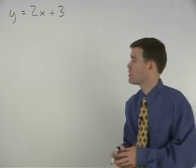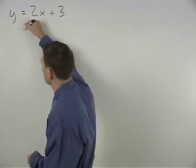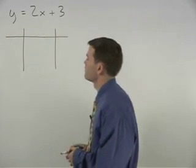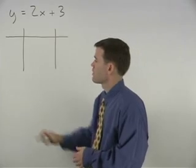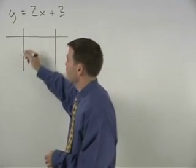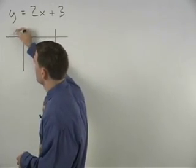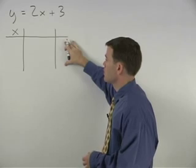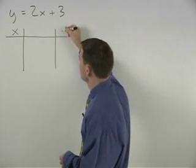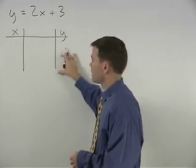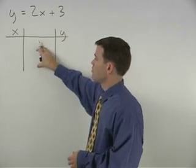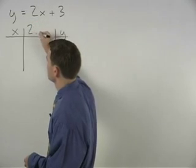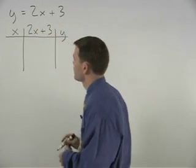In this situation, I would first set up a chart that we can use to organize our information. Down the left side of the chart, we have our different values for x that we'll be plugging into the equation. Down the right side of the chart, we have our different values for y that we end up with. And in the middle, we have the side of the equation that contains the x — in this case, 2x plus 3.